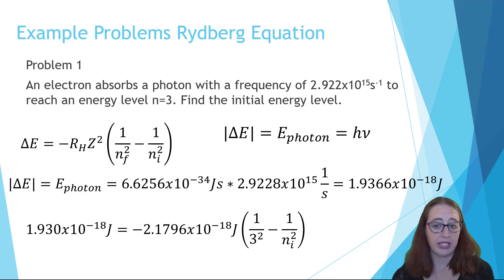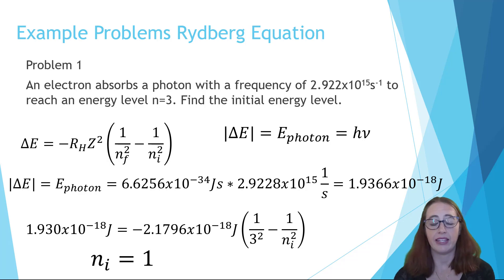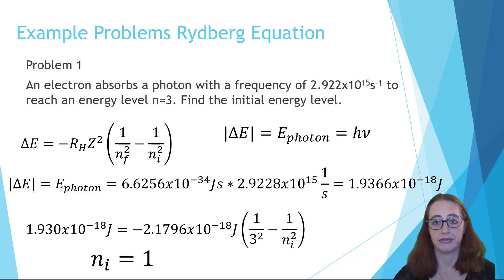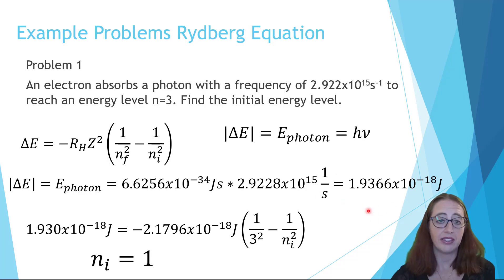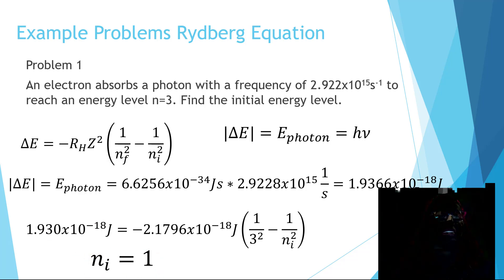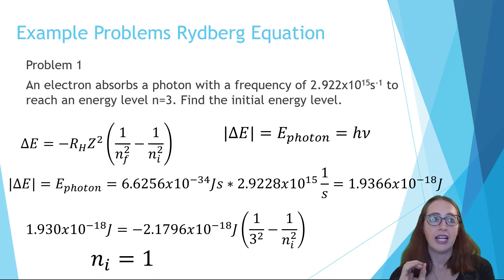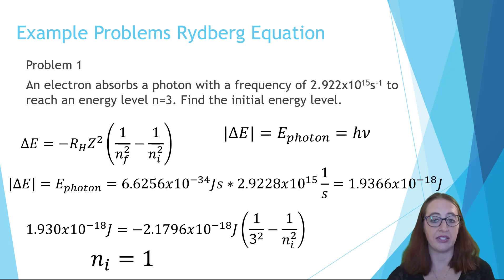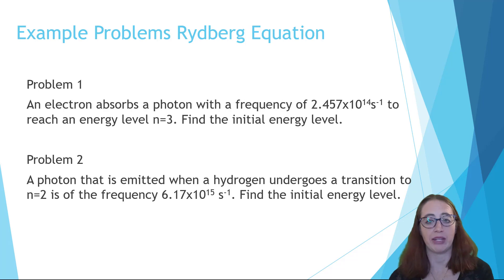Notice that h-nu comes out positive, and we also know delta E must be positive, so we can fill this into the Rydberg equation and solve for n. If you hadn't paid attention and noticed that delta E needed to be positive, you would have gotten this one right by accident and might think your reasoning was correct. But the next problem won't let you slide, so let's move on to the second one.